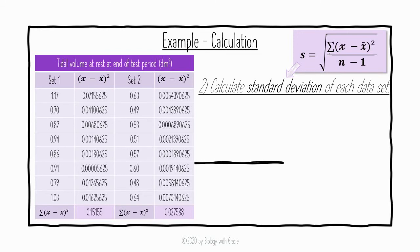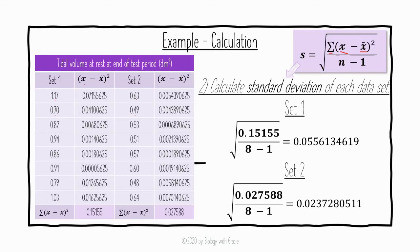Next we calculate the standard deviation of each data set. The equation is: s equals the square root of the sum of (x minus the mean) squared, divided by n minus one, where n is the number of values. For set one, we calculate (x minus the mean) squared for each value — for example, 1.17 minus the mean of set one, squared. Adding all these up gives 0.15155.